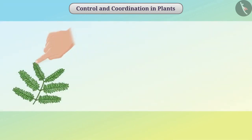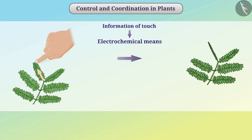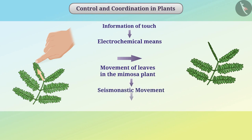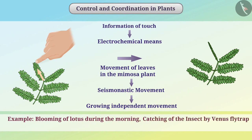Even if you touch the plant at one part, the response is given by other parts as well. Information of touch is transported to other parts by electrochemical means, causing the leaves to close. This movement of closing leaves in the mimosa plant is called sismonastic movement, a growth-independent movement. Similar movements include the blooming of lotus in the morning and the catching of insects by the Venus flytrap.